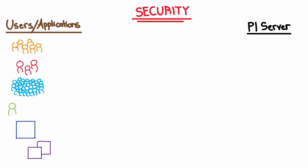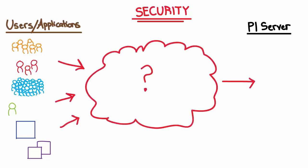Today we're going to draw a high-level map of the mechanisms we use to configure PI Server Security. PI Server Security allows us to control who or what gets access and to tailor these permissions in a manageable way.